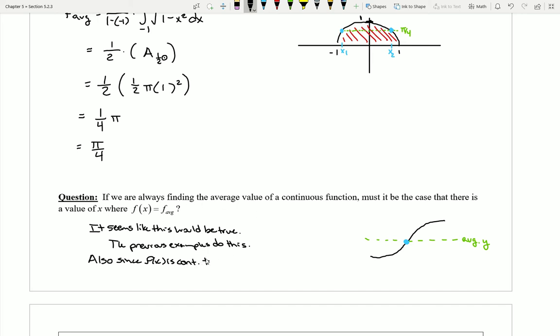So I could also say here that since f(x) is continuous in this example, then it seems that it would have to cross the average y value somewhere. This seems at least reasonable.